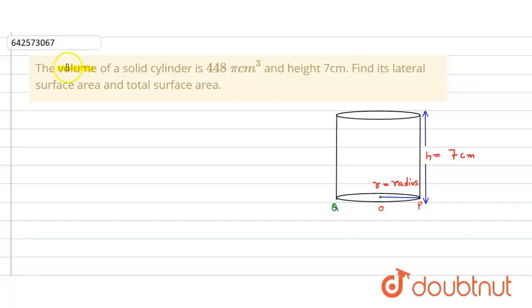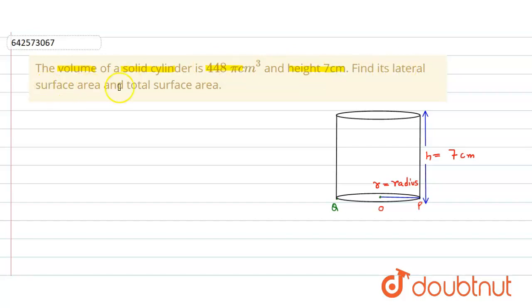In the given question, the volume of a solid cylinder is 448π centimeter cube and the height is equal to 7 centimeter. We have to find its lateral surface area and the total surface area.